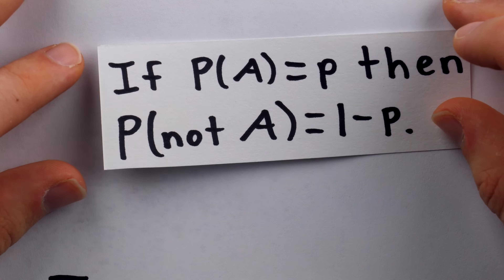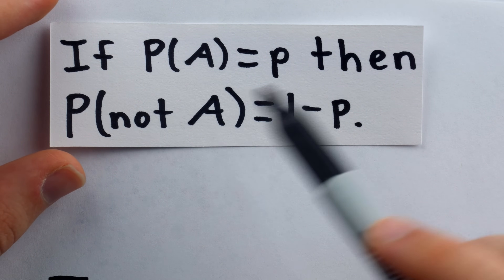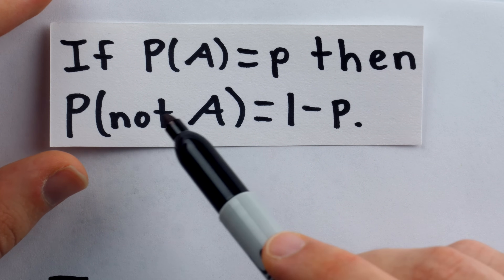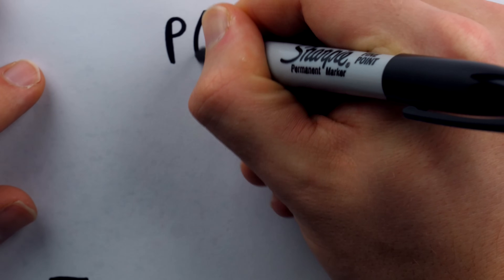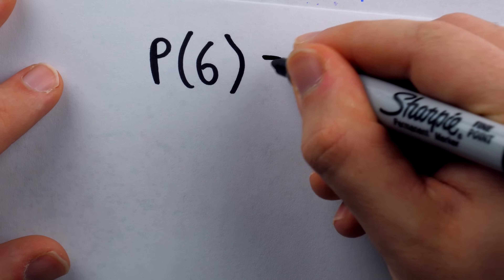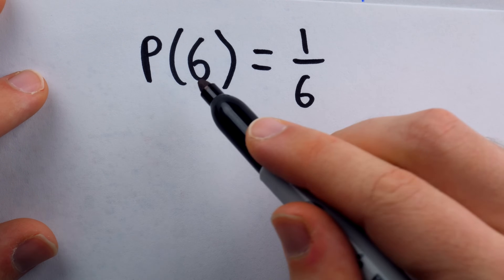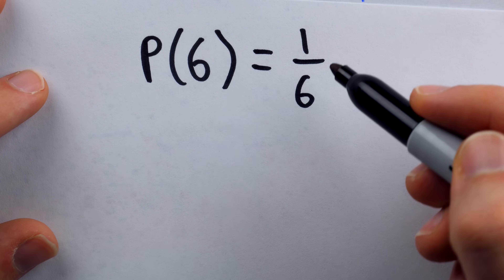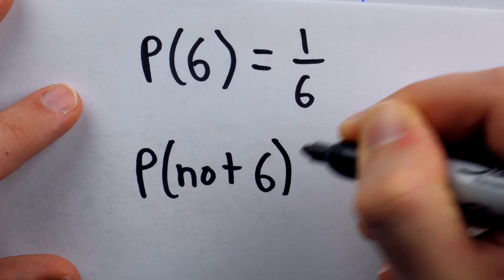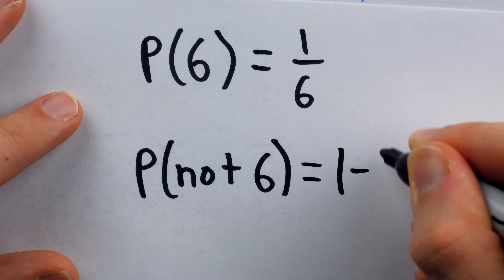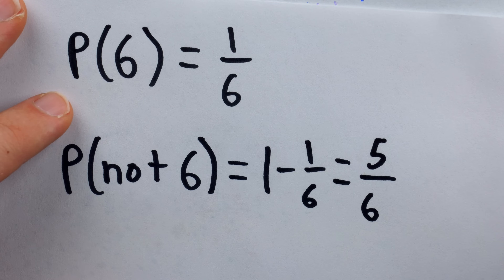The first is a basic law of probability called the law of complement. If the probability of an event A is equal to P, then the probability of the event A not occurring is equal to 1 minus P. For example, if we're rolling a six-sided die, the probability of rolling a six is one out of six, because only one of those six equally likely sides shows a six. So the probability of not rolling a six is 1 minus 1/6, which is five-sixths.